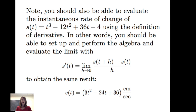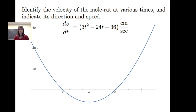You should be able to evaluate the instantaneous rate of change of s of t equals t cubed minus 12t squared plus 36t minus 4 using the definition of the derivative — setting up the algebra and evaluating the limit — to confirm that s prime of t equals 3t squared minus 24t plus 36 centimeters per second. Graphing this velocity function gives a parabola.